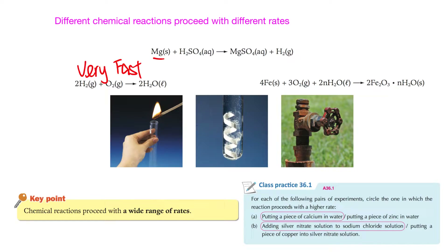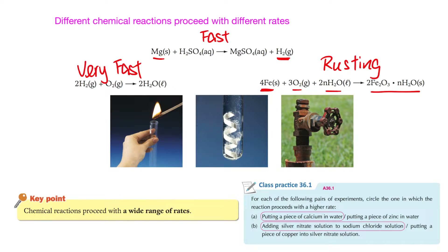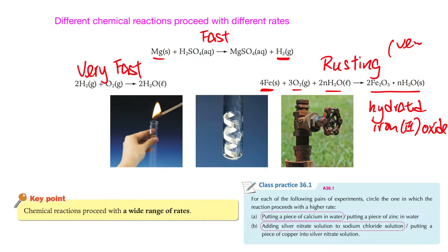In the middle example, we put magnesium into acid — metal reacting with acid — this is also a fast reaction because you can see hydrogen gas forming very quickly, releasing from the magnesium. However, on the right hand side, iron reacting with oxygen and water is a rusting process, which is very slow — it will take weeks to see hydrated iron(III) oxide form. So this is a very slow reaction.